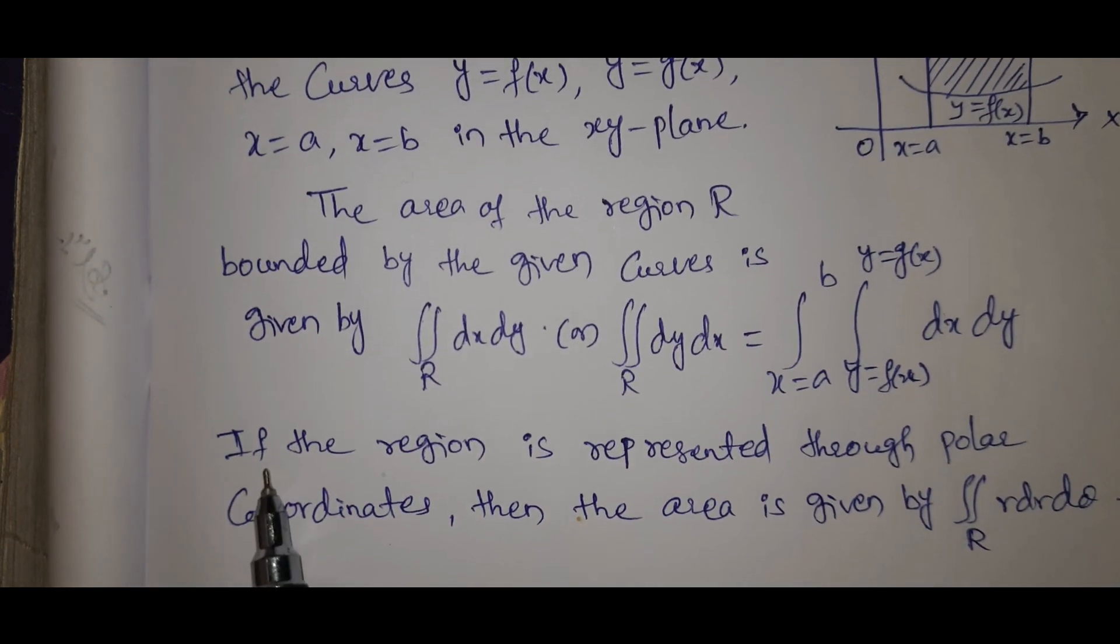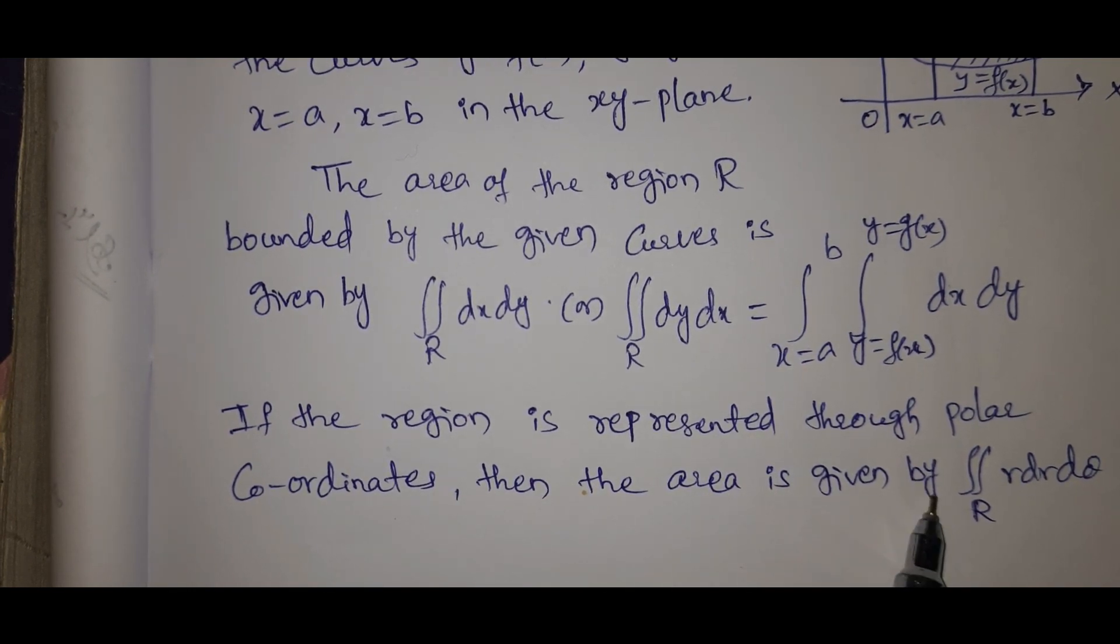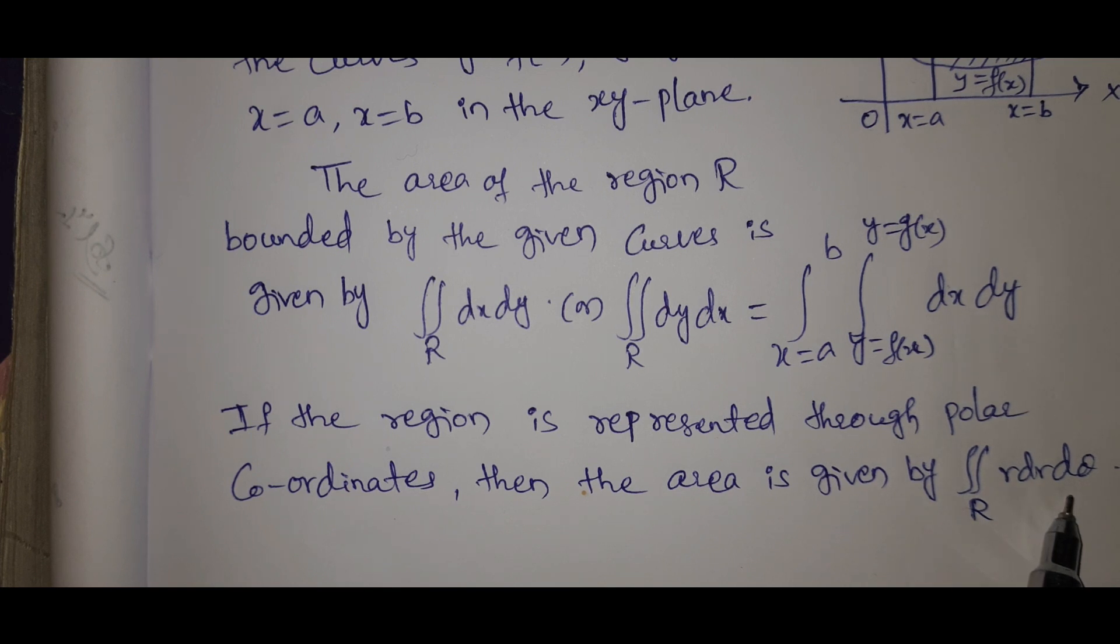If the region is represented through polar coordinates, then the area is given by double integral r dr d theta.